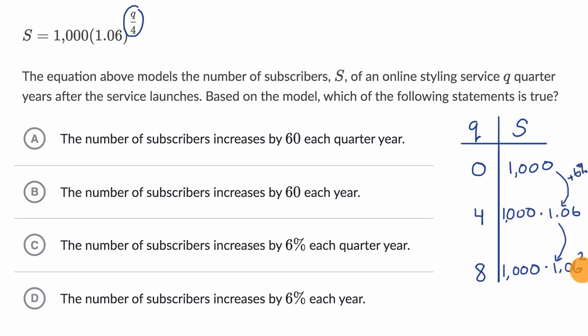which is another year going by, we're multiplying by another 1.06. So that's growing by another 6%. So it looks like we're growing by 6% every four quarters, or every year.